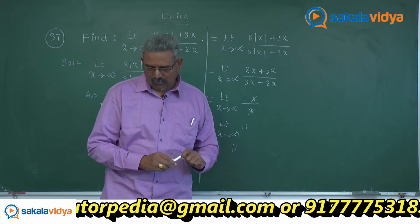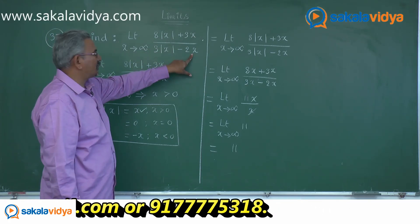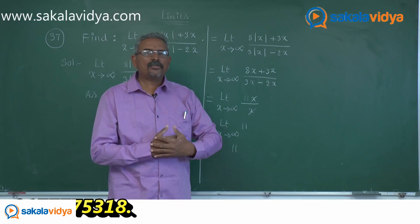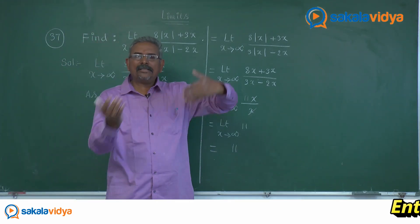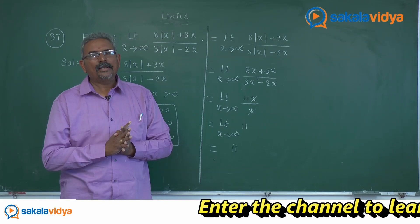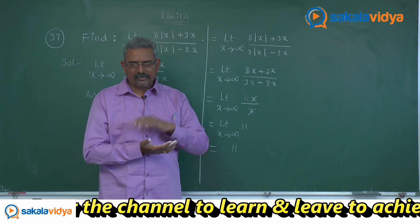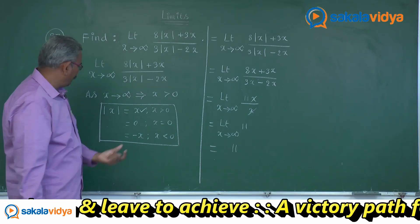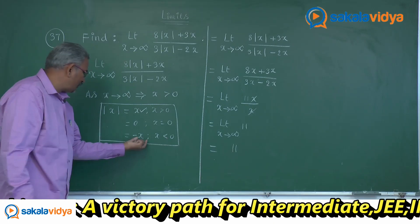Let me also explain in the regional language Telugu. For limit x tends to infinity of (8|x| + 3x) divided by (3|x| − 2x): as x tends to infinity, x > 0. Using the definition of the absolute value of a real number — mod x equals x when x > 0, equals 0 when x = 0, and equals −x when x is negative.